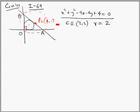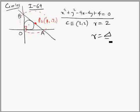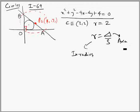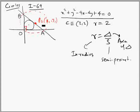Let the midpoint be point P with coordinates (x1, y1). We have to find the locus of the midpoint of AB, because this midpoint of AB is the circumcenter of triangle OAB. Since the midpoint is (x1, y1), we can write the coordinates of A as (2x1, 0) and B as (0, 2y1).